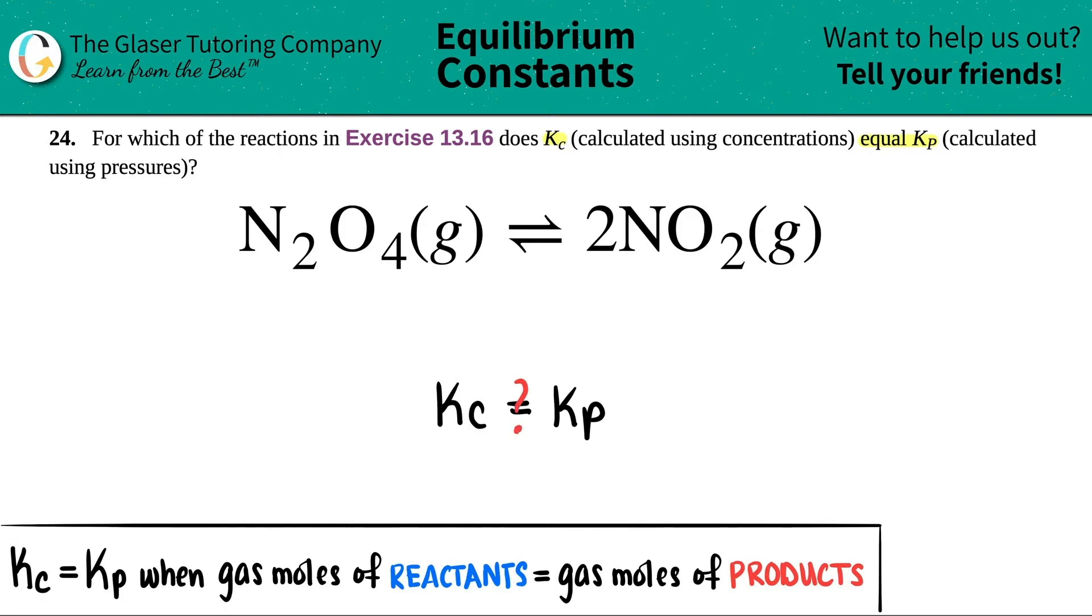Well, let's see. The Kc will equal the Kp when the gas moles of the reactants equal the gas moles of the products. But pay attention, they only care about the gases.